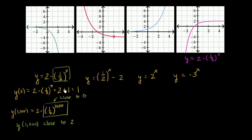We can also think about its behavior as x gets more and more negative. 1 third to a very negative number is the same thing as 3 to a very positive value. So as x gets more and more negative, this part becomes essentially 3 to a large positive value, and since you're subtracting it from 2, y becomes more and more negative. This is consistent with what we see in the graph.